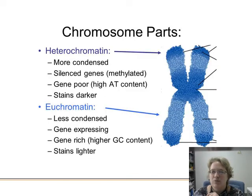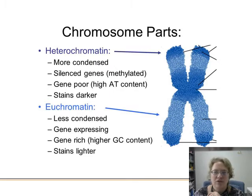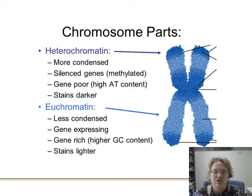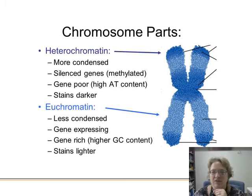Where the DNA is more dense, it soaks up more dye; where it's less dense, it doesn't attach to the dye as much. That's where we're talking about heterochromatin — condensed, silenced, gene-poor, darker-staining regions of the chromosome. Whereas euchromatin, the lighter bands, are less condensed, gene-expressing, gene-rich, with higher GC content and staining a little bit lighter. So we can actually tell heterochromatin versus euchromatin bands along the cytological map.